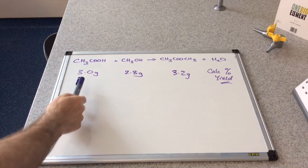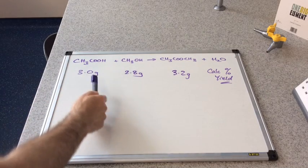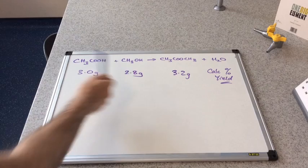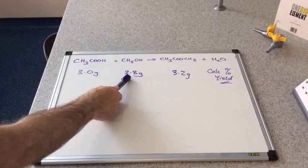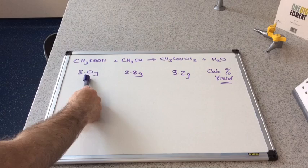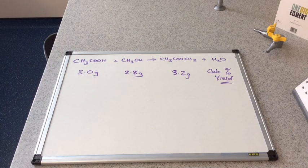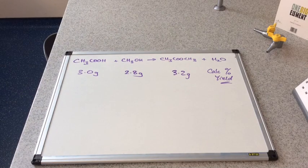The first thing we need to establish is which of these reactants is the limiting reagent. Now, the examiner sometimes is a bit nasty, and you're given these masses here. They're hoping that some students will automatically go, right, that's 2.8, that's smaller than that, that's my limiting reagent. Well, that may not be the case.